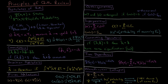Dirac notation is a convenient shorthand for representing wave functions and integrals, becoming very useful later when many such integrals arise. A "ket" represents the wave function, and a "bra" represents the complex conjugate. Together they form a "bra-ket," or bracket — Dirac's clever naming convention.